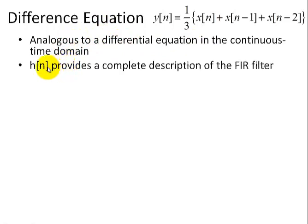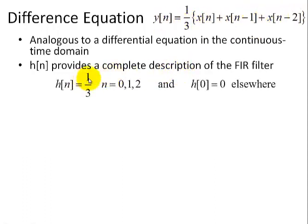H(n) provides a complete description of the FIR filter. Recall, H(n) is the impulse response. For this example, H(n) equals one-third for n equals zero, one, and two, and zero everywhere else. That's our description of this moving average filter, also called a sliding window filter.